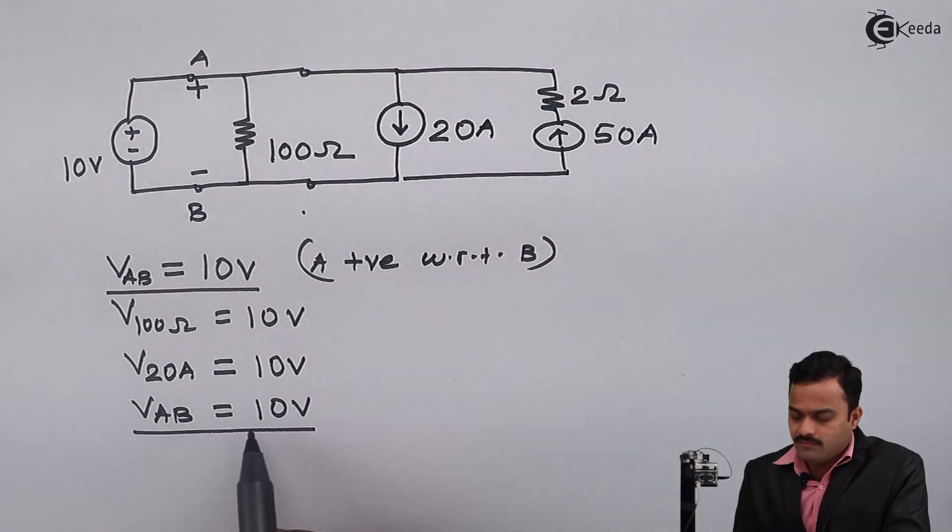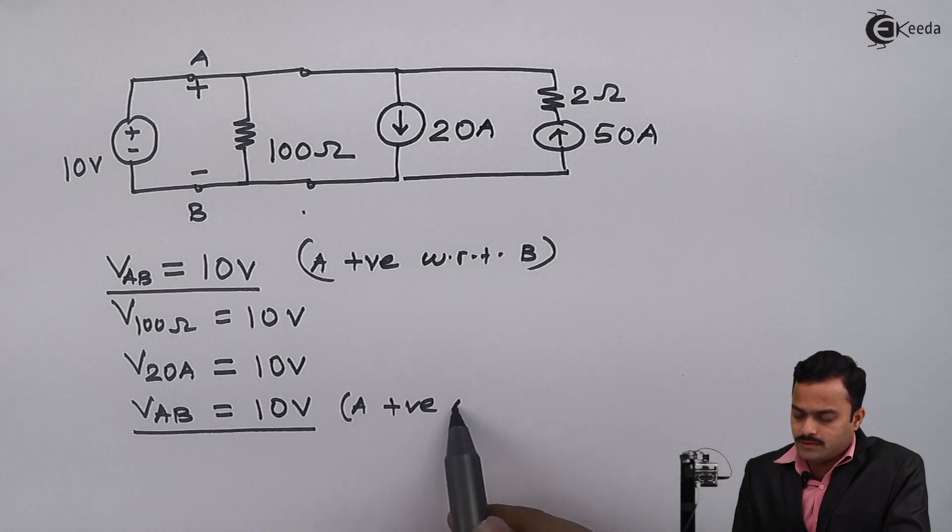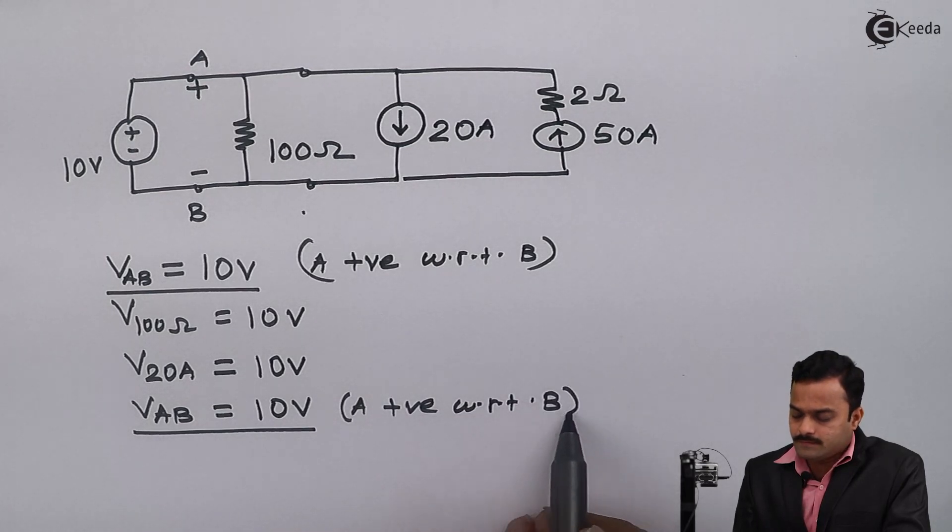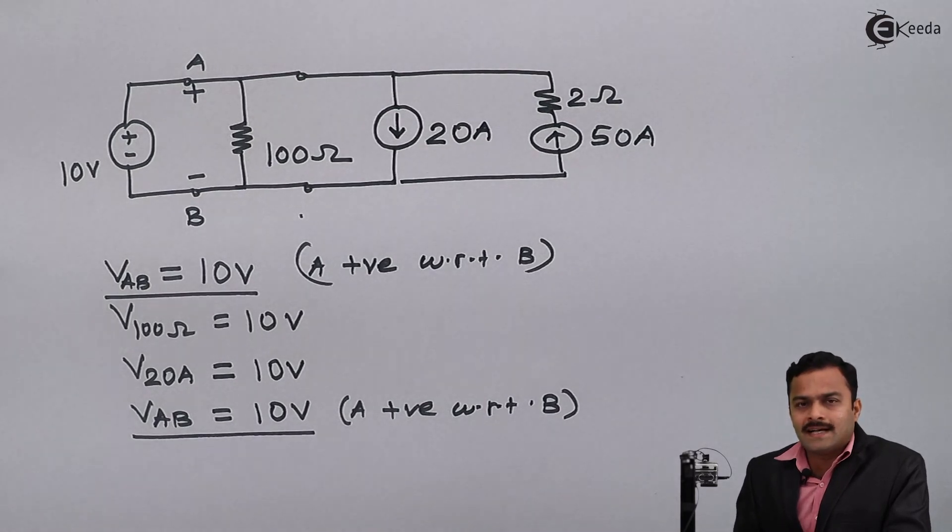So the concept is that voltage between any two points will always fix up the potential difference between those two points, irrespective of any other element connected between those two points. Thank you.